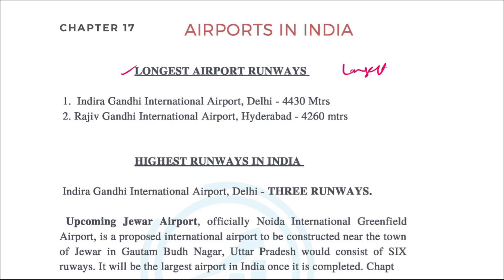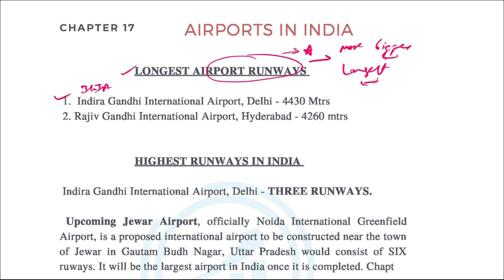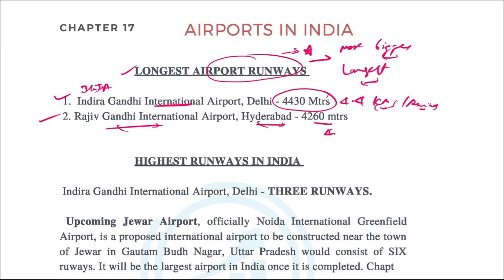In India, some airports have the longest runways. The longer the runway, the bigger the aircraft the airport can handle. The longest runway in India belongs to Indira Gandhi International Airport, Delhi, at 4,433 meters — approximately 4.5 kilometers. It is followed by Rajiv Gandhi International Airport in Hyderabad, at 4.26 kilometers. Remember: the longest airport runway in India is in Delhi.